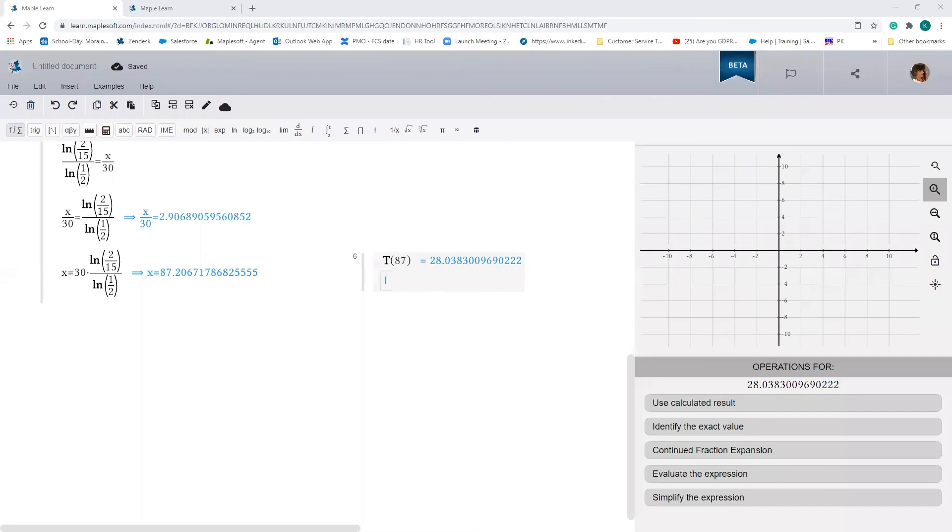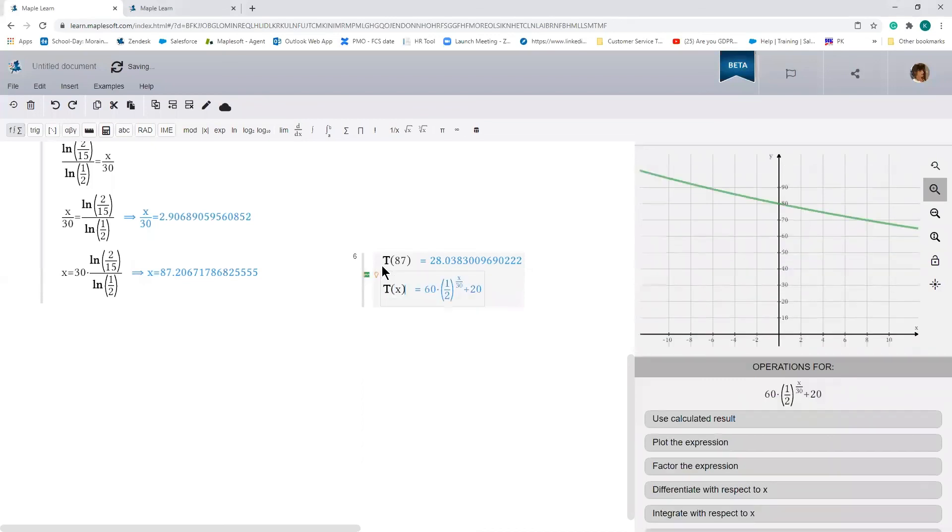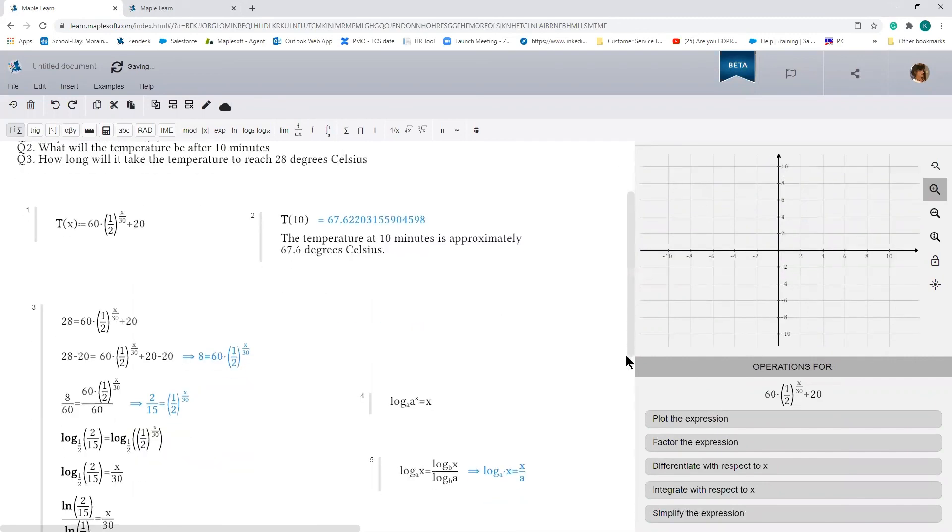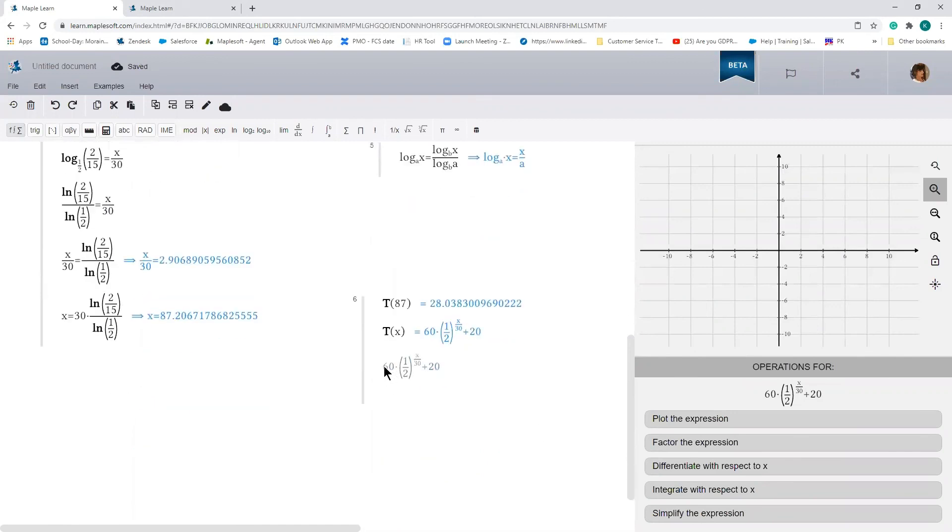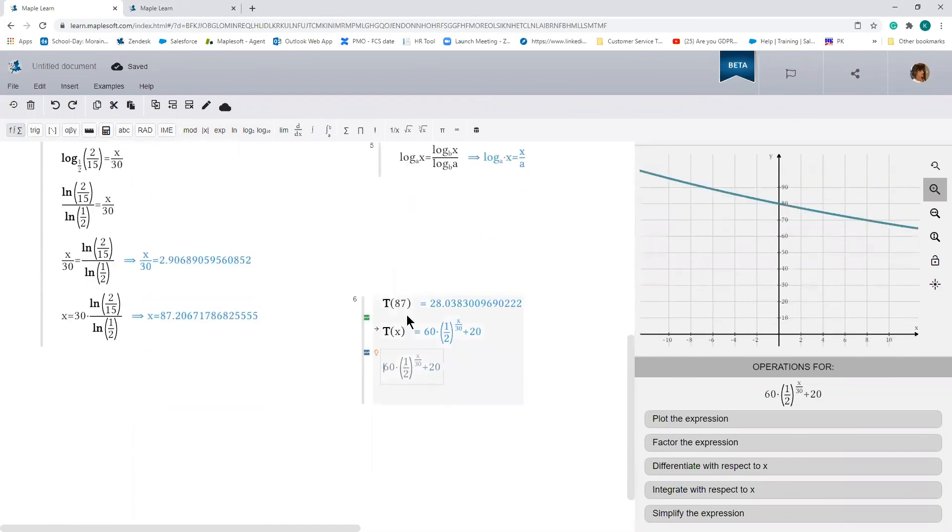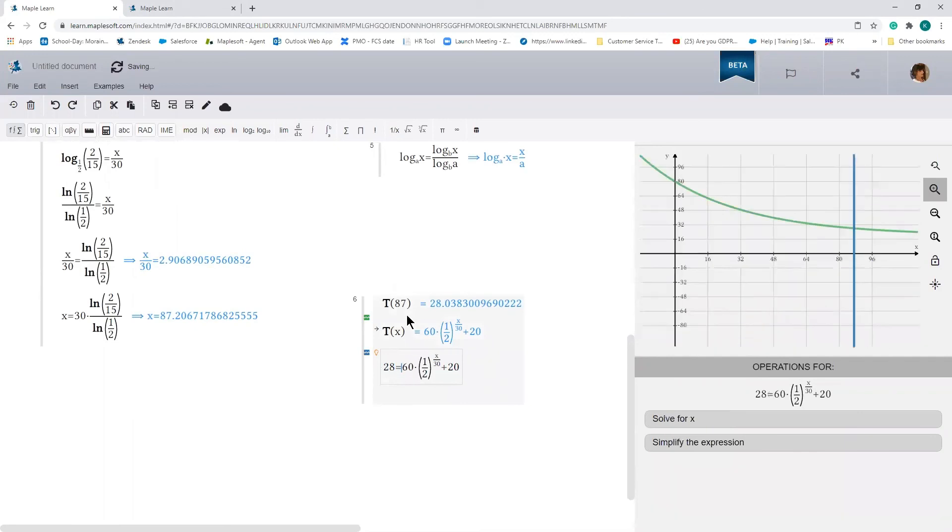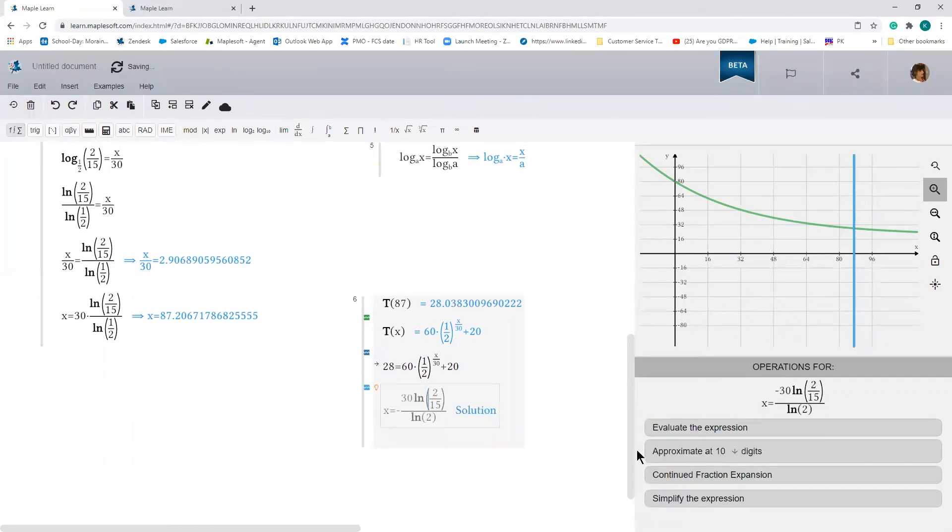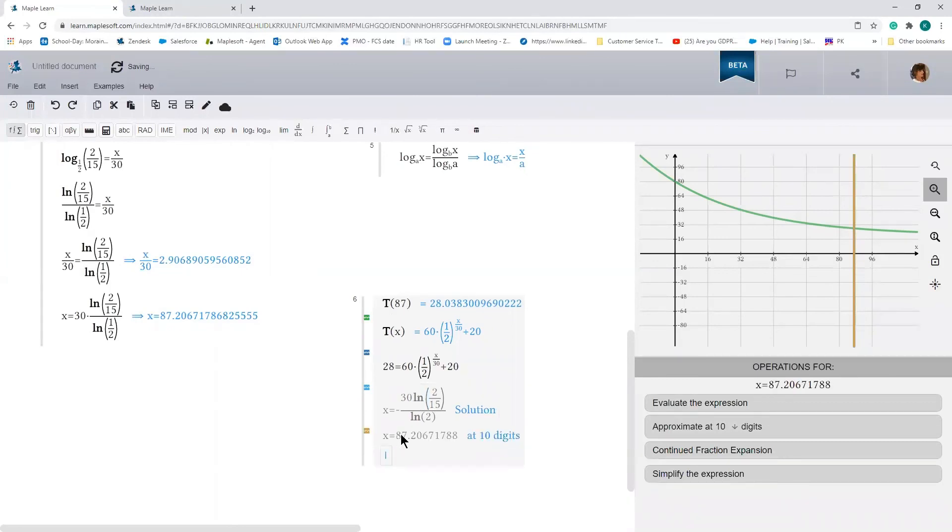Now we can also use MapleLearn's context panel to solve for x. So let me show you how you can do that. So t of x is what we defined it as. And I want this to be 28. And now we can click on solve for x. And this is the result. And this is the exact solution. And we want the approximate solution, which is about 87.2, exactly the same thing as we obtained solving it ourselves.